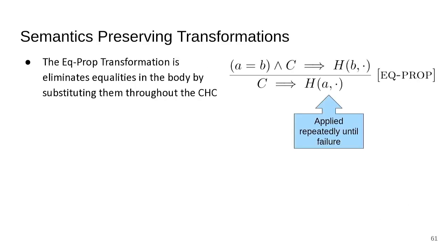We do this by applying semantics-preserving transformations. The first and most important is equality propagation, or EQ-prop for short. It says that if we have an equality in the body between A and B, and an instance of B occurs in the head of the CHC, then we can remove the equality from the body and substitute B for A in the head.